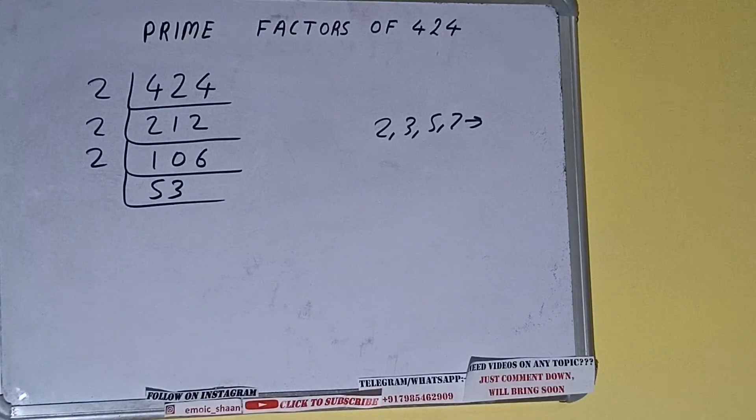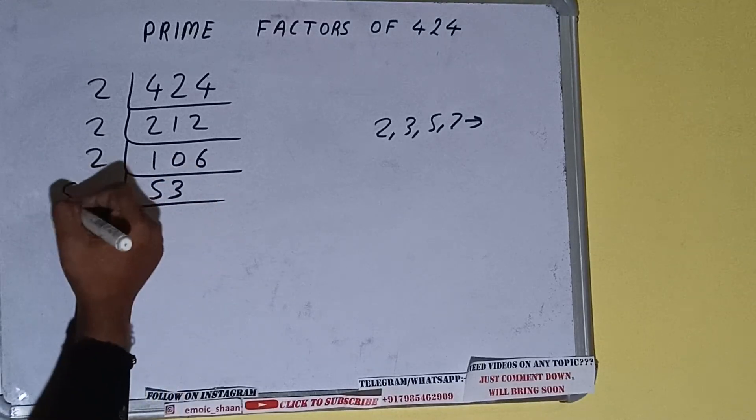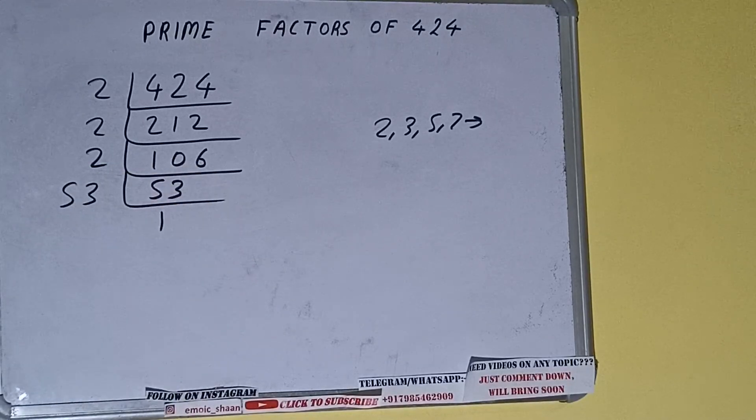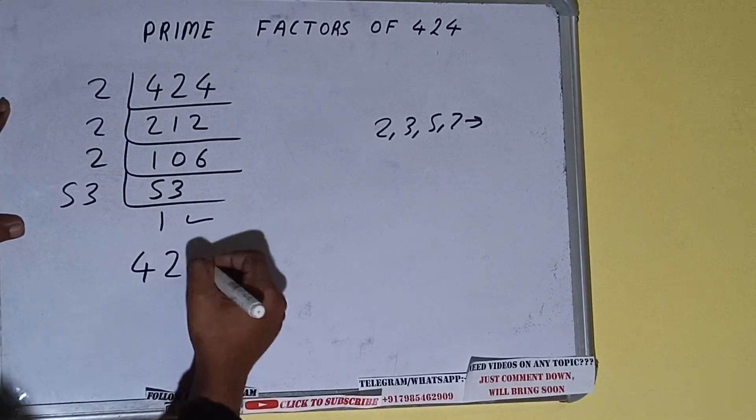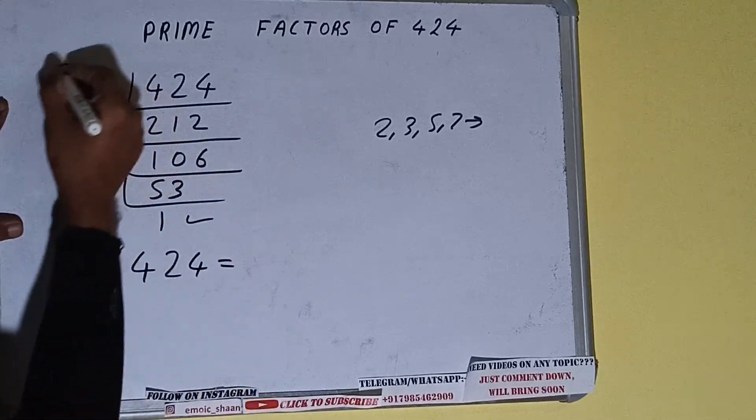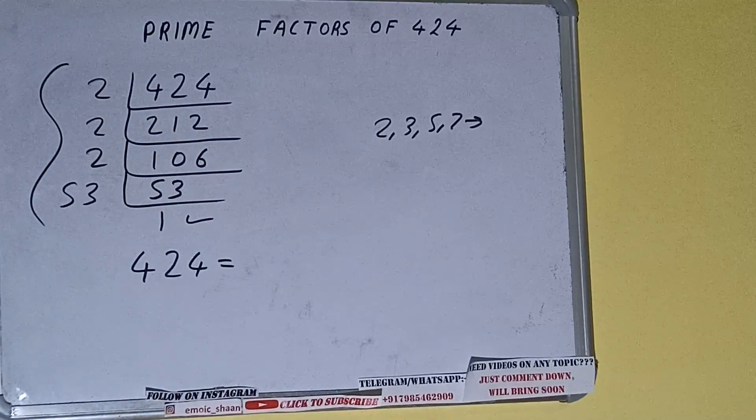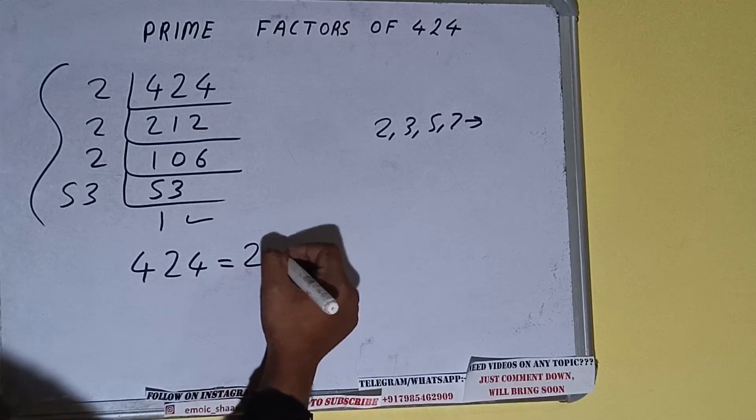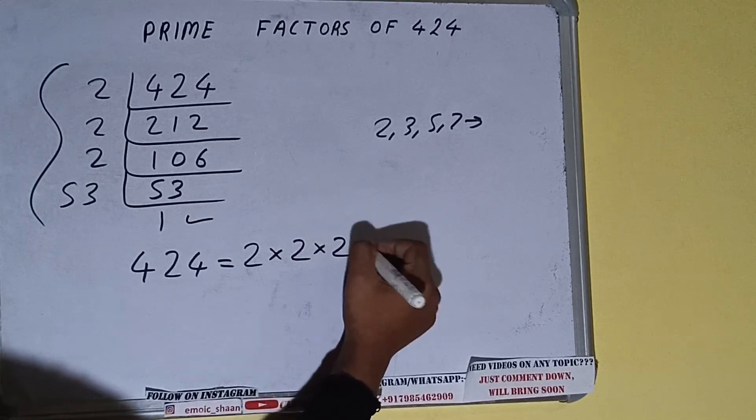Is 53 divisible by 2? The answer is no, because the number is odd, and the number 53 is also a prime number, so it is only divisible by itself, that is 53. Once we do so, we will be getting one. Once we get one, we need to stop and do one last thing: the prime factorization of 424 equals multiplying whatever we have on the left-hand side, that is 2 × 2 × 2 × 53.